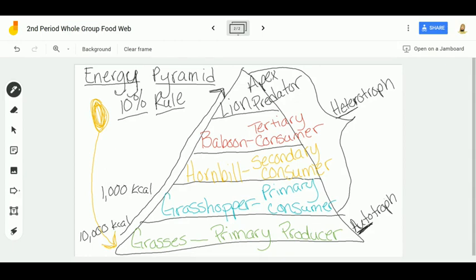And it keeps going - the baboon is only going to get 10 kilocalories, and finally my lion would get 1 kilocalorie. Now, even though when you're looking at energy pyramids the numbers may change, the rule stays the same - only ten percent is being passed to each level.